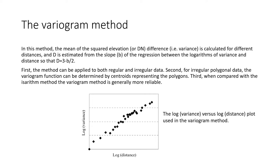Variogram method. In this method, the mean of the squared elevation DN difference is calculated for different distances, and D is estimated from the slope of the regression between the logarithms of variance and distance, so that D = 3 − b/2. First, the method can be applied to both regular and irregular data. Second, for irregular polygon data, the variogram function can be determined by centroid representation of polygons. Third, compared with isarithm methods, the variogram method is generally more reliable. As you can see in the figure, there is a log of variance versus log of distance plot used in the variogram method.